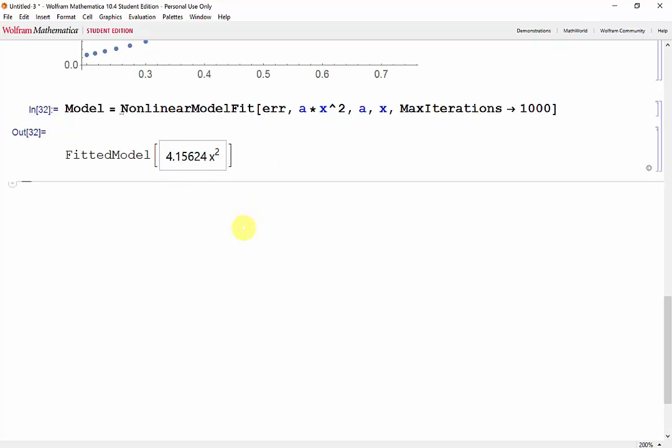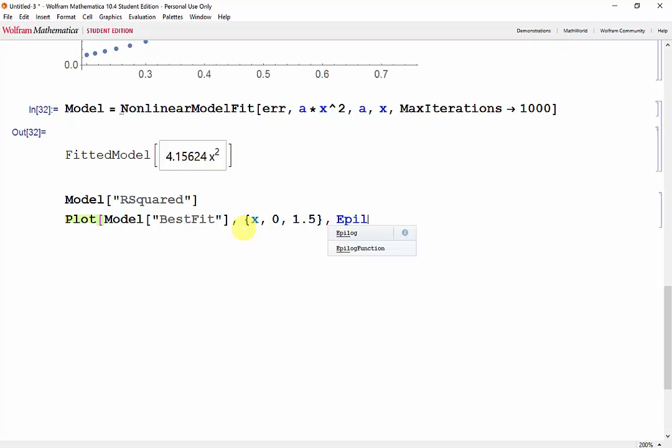Now, plotting and obtaining the R² value. We'll grab the R² from model and then plot the best fit of model, where x goes from 0 to 1.5, with an Epilog.